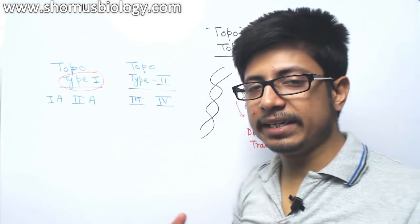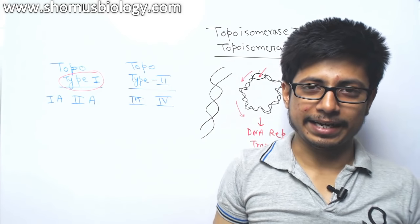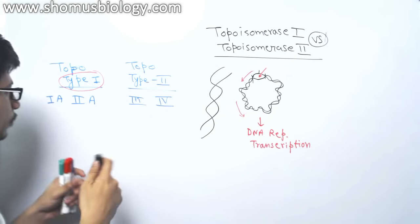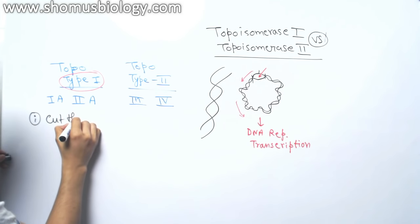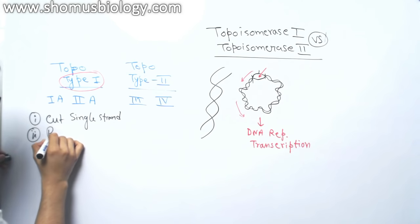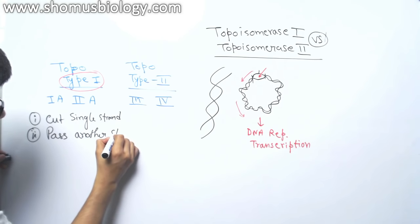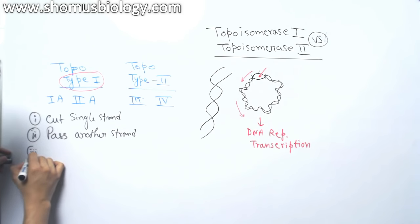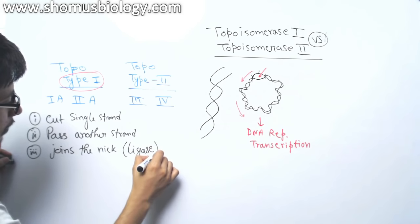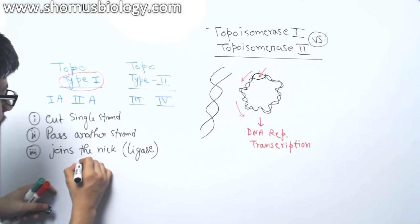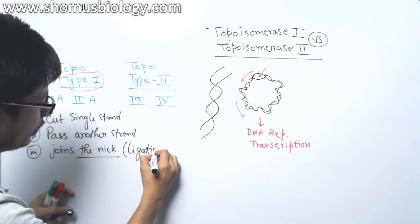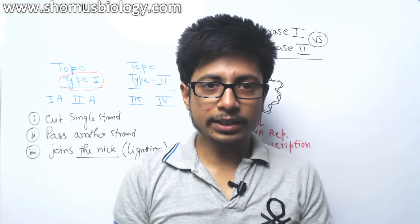Topoisomerase type 1 actually releases this type of single-stranded nick. It cuts one strand of the DNA, passes it through another one, and re-ligates it. Topoisomerase type 1 cuts a single strand, passes another strand through that nick, and then rejoins the nick — and actually, they do not need a separate ligase. They can do this ligation job on their own.